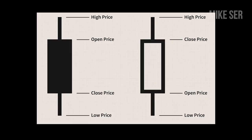Let me first explain how to read a candlestick chart. There are four price components to a candlestick chart: open price, close price, low price, and high price. The open price shows where the stock opened at for that period, the close price shows where the stock closed at for that period, the low price shows the lowest price for that period, and the high price shows the highest price for that period.